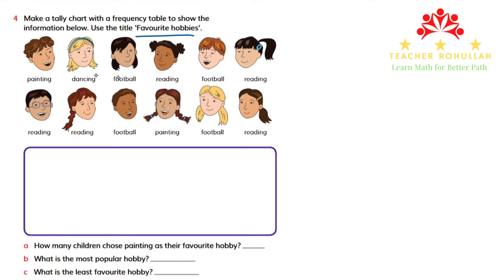Students are asked about their hobbies. Let me count — there are 12 students in total, and they have been asked about their favorite hobbies. We have to show their responses using a tally chart and a frequency table.